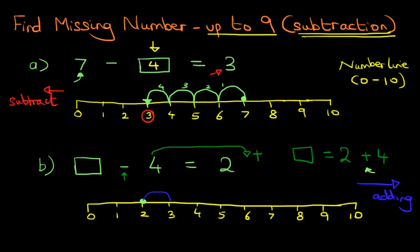Let's take 4 jumps to the right. We've got 1, 2, 3, and 4. Let's count it again: 1, 2, 3, 4. We've made the 4 jumps. What number have we landed on? We have landed on number 6. So, number 6 is the answer. 6 minus 4 equals 2.